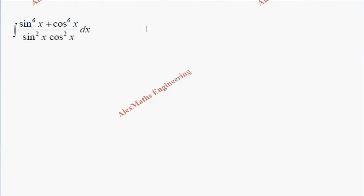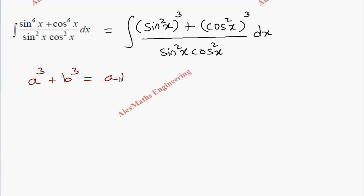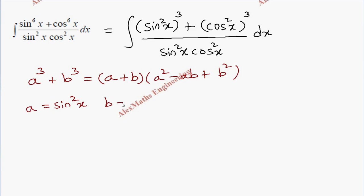First of all, the numerator can be written as (sin²x)³ — sin⁶x is written as (sin²x)³ — plus (cos²x)³, with the denominator sin²x · cos²x dx. Now in the numerator we are going to apply the algebraic formula a³ + b³ = (a + b)(a² − ab + b²), where in place of a we have sin²x and in place of b we have cos²x.